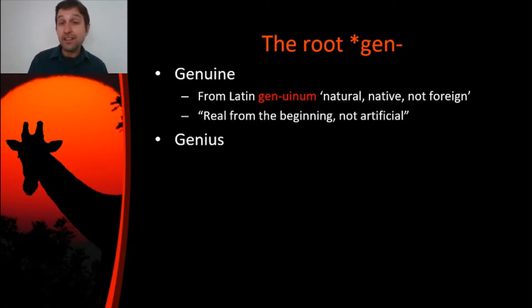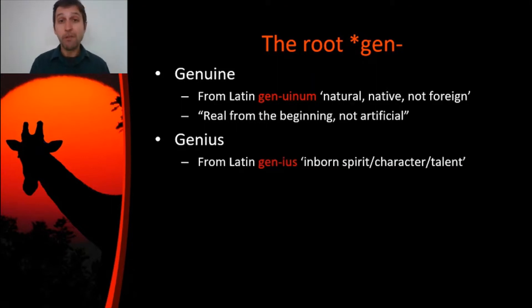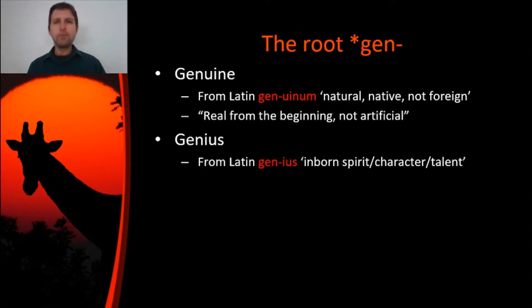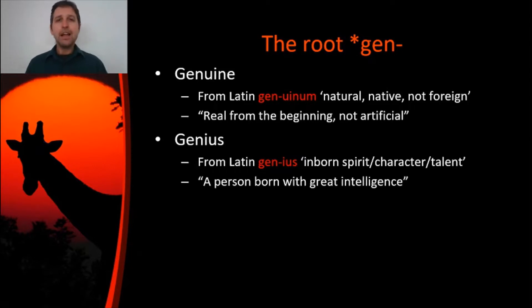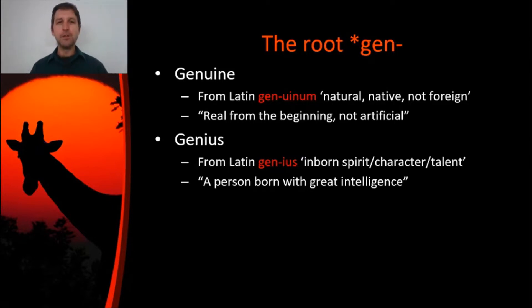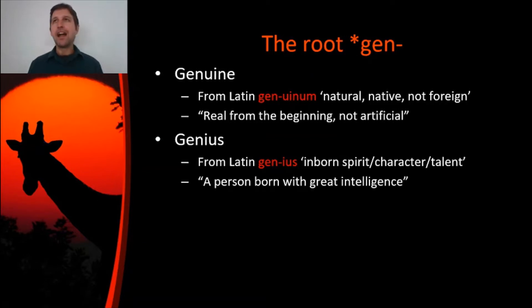What about a word like genius? Genius also goes back to Gen, and it goes back to a Latin word spelled the same way, pronounced genius. In Latin, genius was something that is with you from birth — it could be your talents or your character as a person. Most commonly, many Romans believed there was what we would today call a guardian angel, a spirit that watches over you from birth. That would be your genius. Today we really just use it to mean somebody who is really smart, somebody who has been born with great intelligence — and you can see the Gen root in action there.